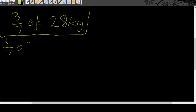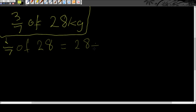So one-seventh of 28 is going to be equal to 28 divided by 7. And 28 divided by 7 gives us 4.